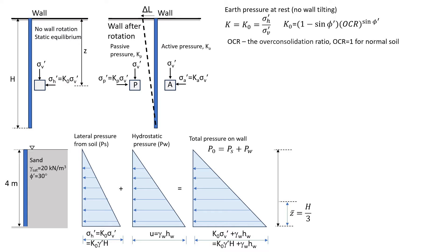Good day everybody. In this video I would like to show you how we can estimate the earth pressure on a wall. We will start with fundamentals and look at the theory, and in my following videos I will show you how we can estimate passive and active pressures, incorporate surcharge, and look at different types of soil. First, let's start with this schematic diagram - we have a soil mass and a wall; it can be a retaining wall or any other wall inserted in the ground.